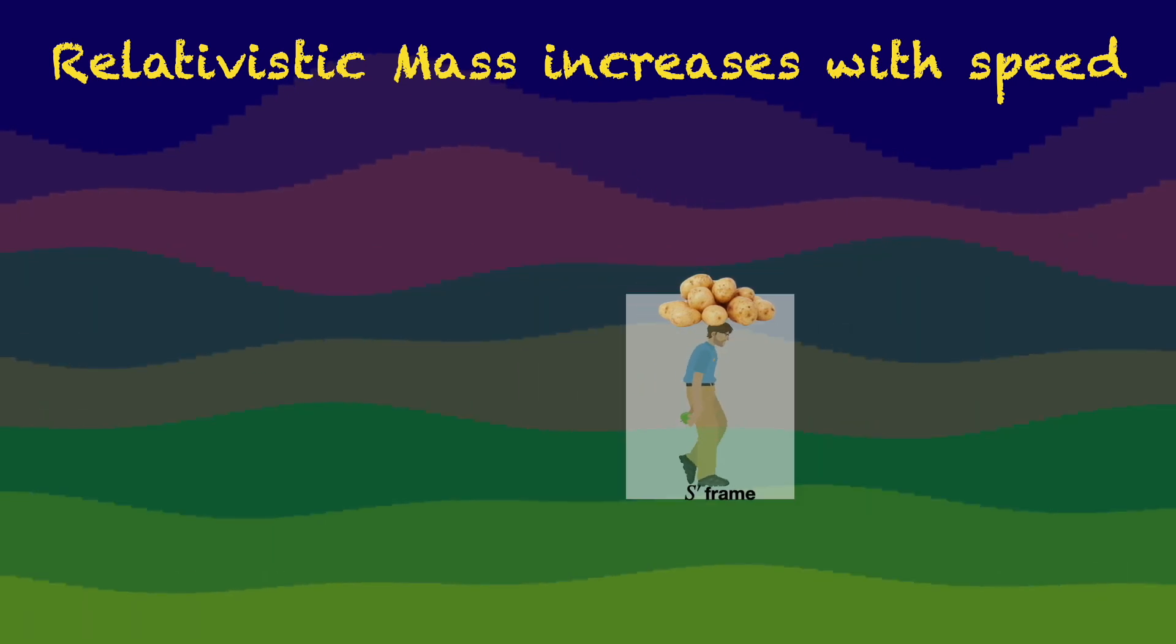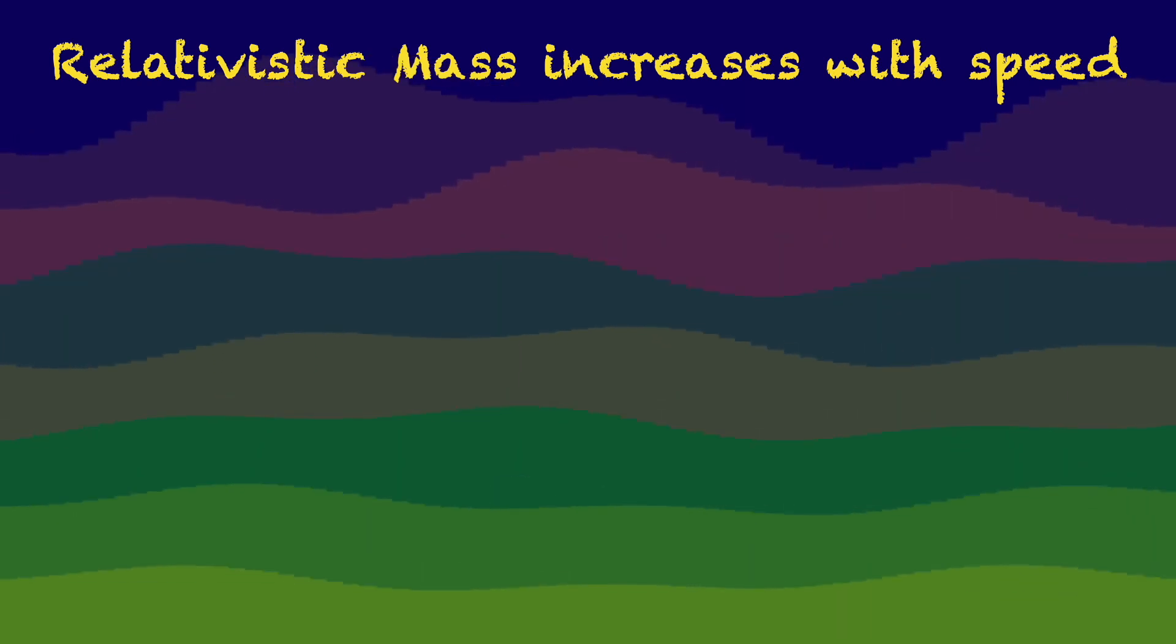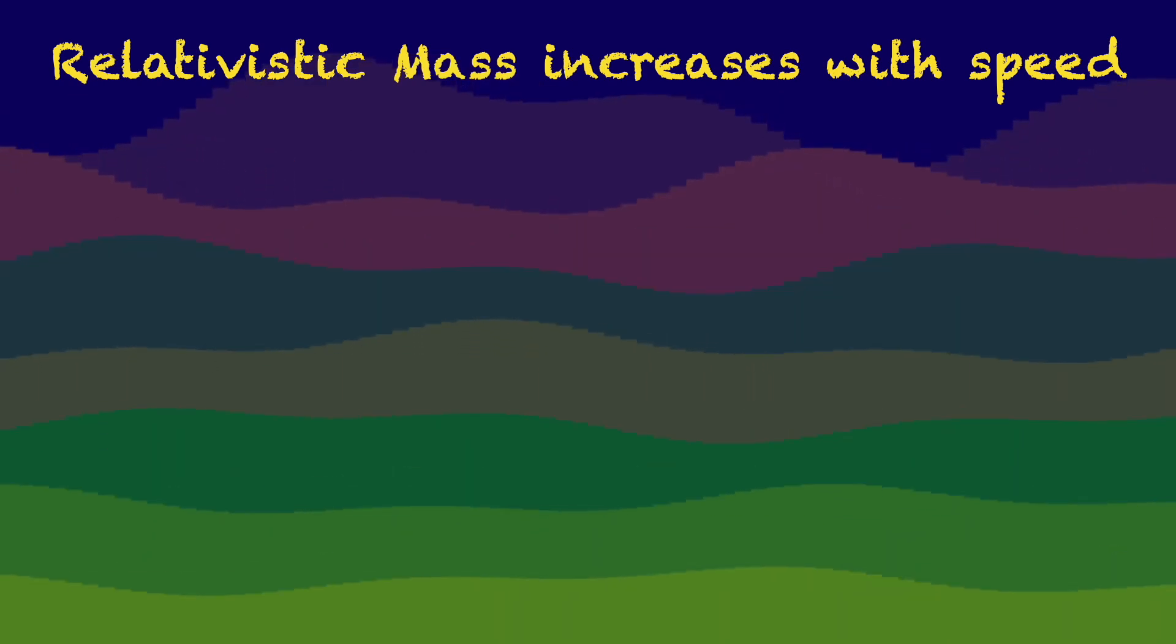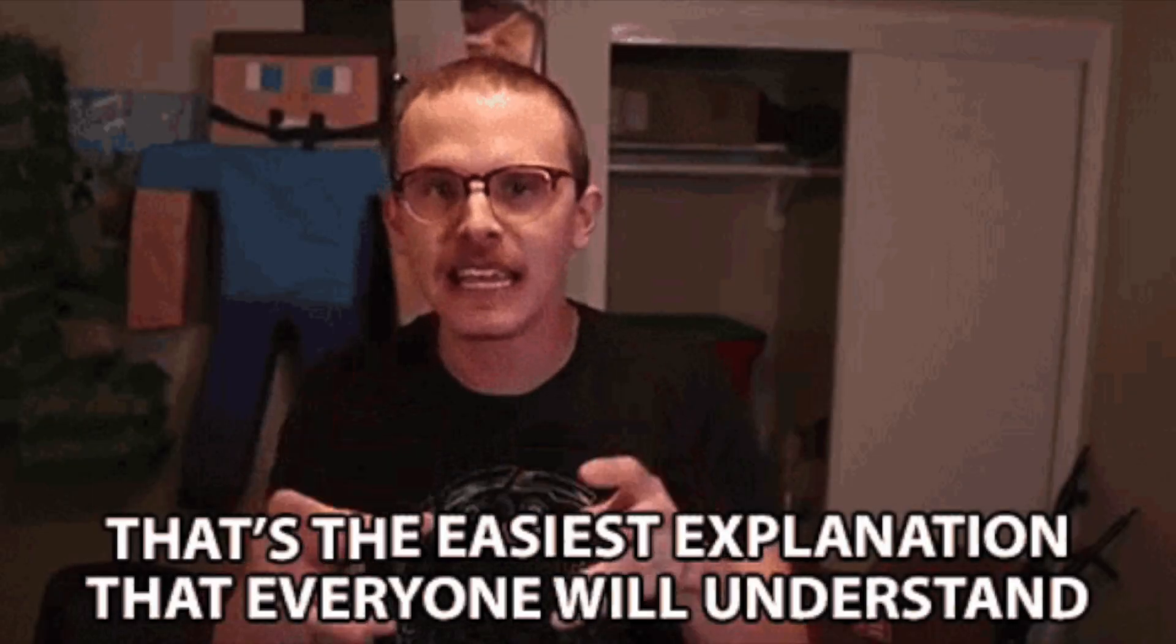More mass means more resistance to the object's motion. So, as the object grows faster and faster, it becomes increasingly harder to further speed it up. This is the staple explanation.